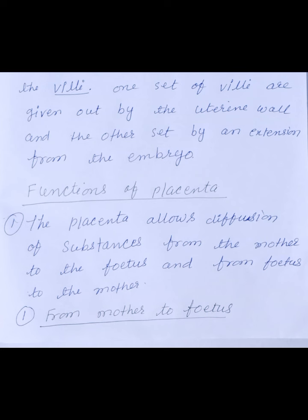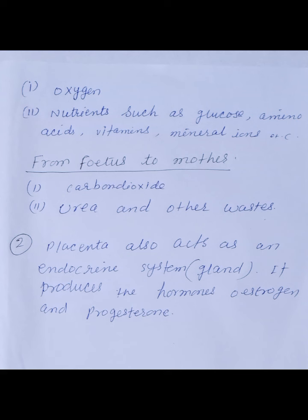From mother to fetus — Mother से fetus को क्या चाहिए? Number one: oxygen. Number two: nutrients such as glucose, amino acids, vitamins, mineral ions, etc. From fetus to mother — fetus से mother को क्या मिलेगा? Number one: carbon dioxide. Number two: urea and other waste materials. Excretory material fetus से mother में जाता है.